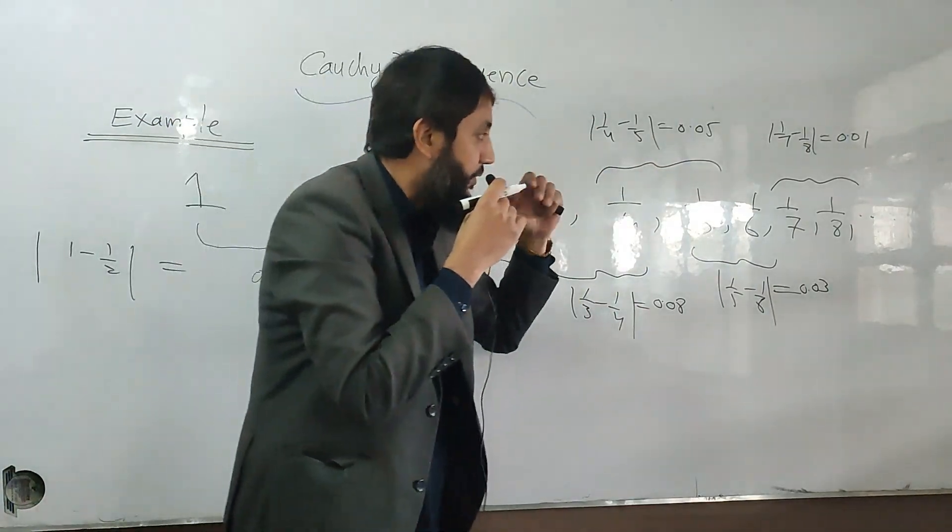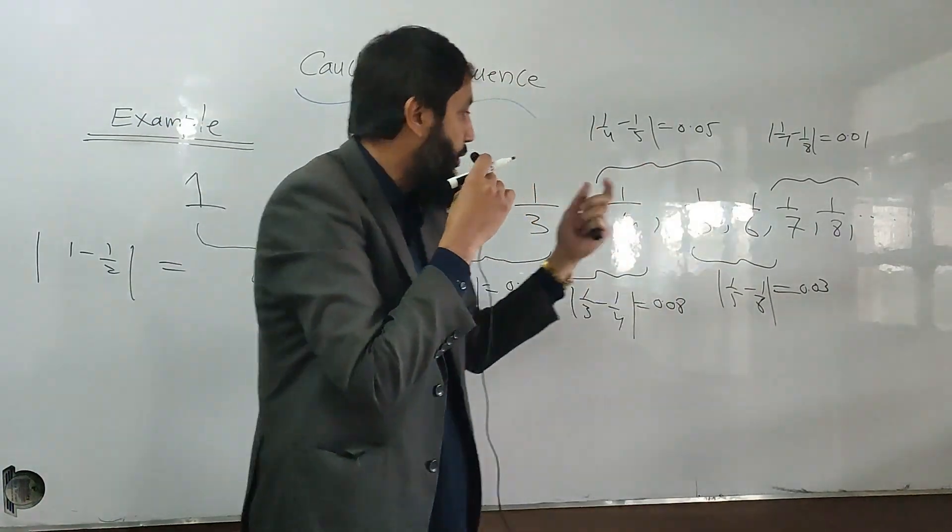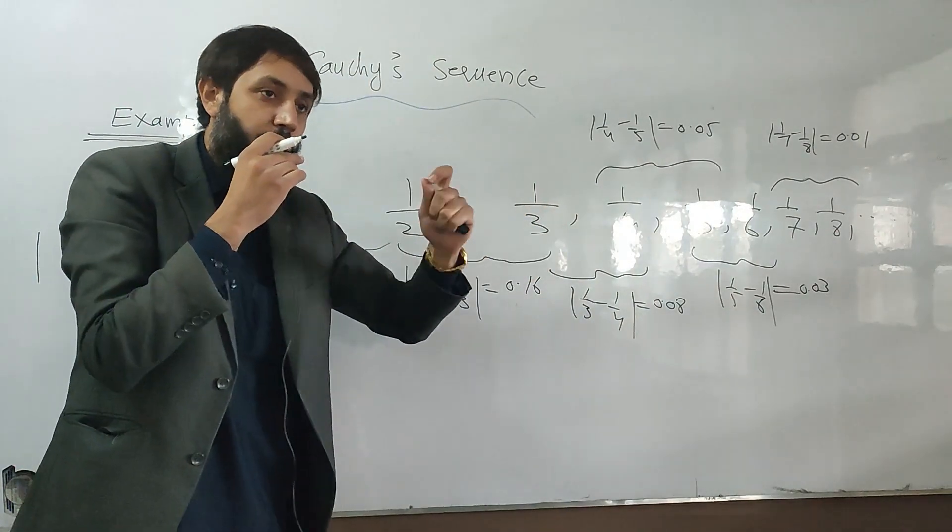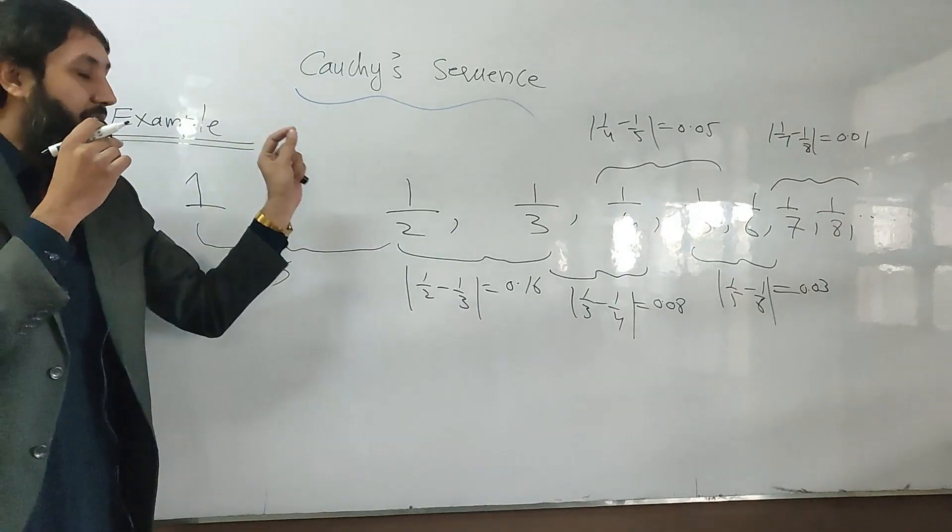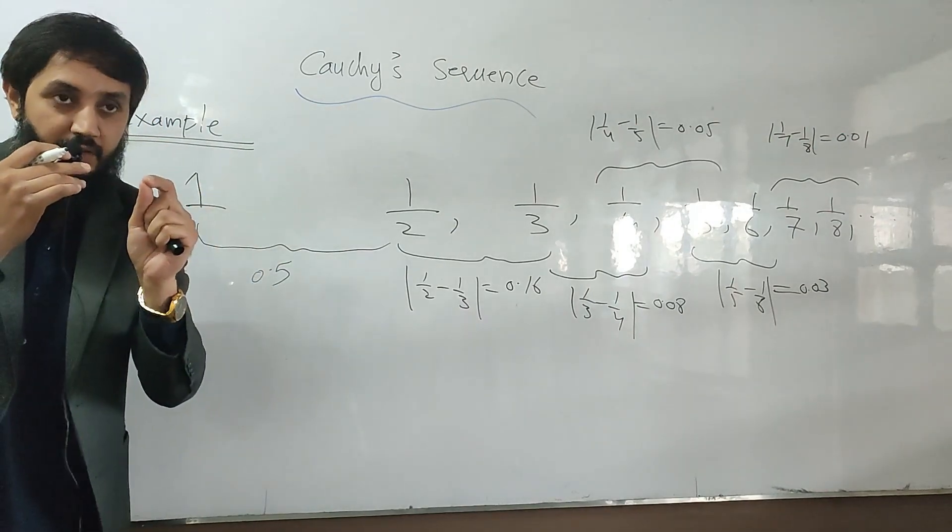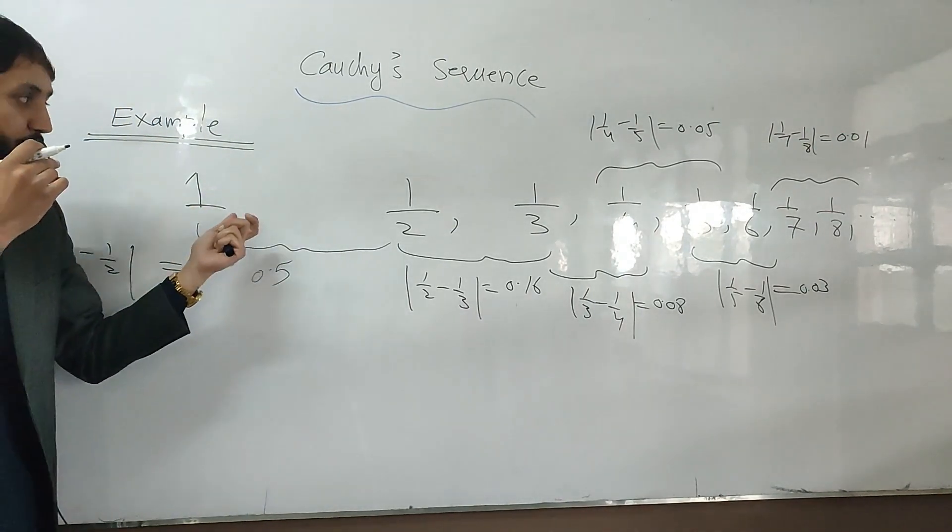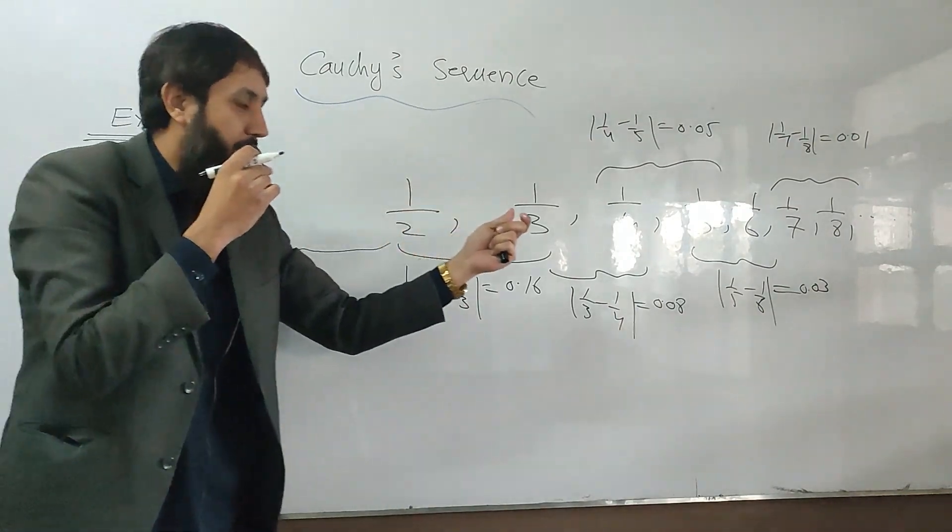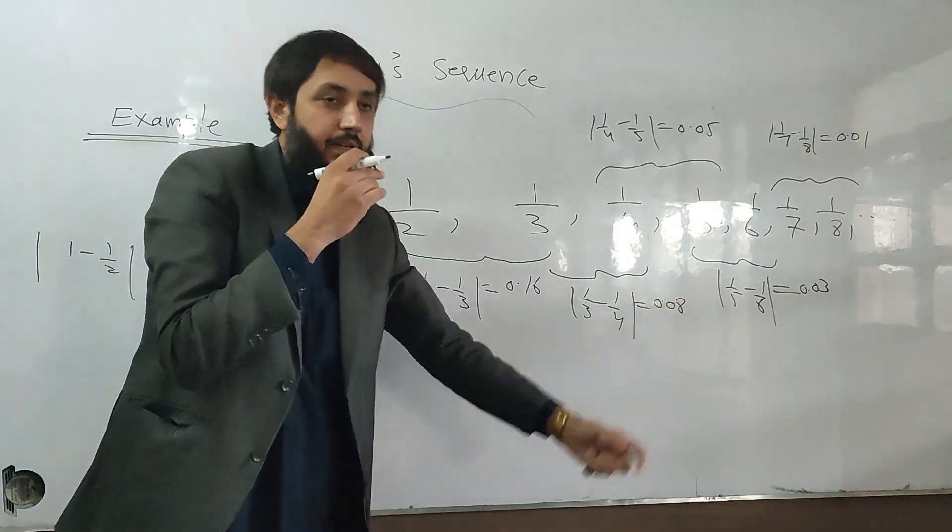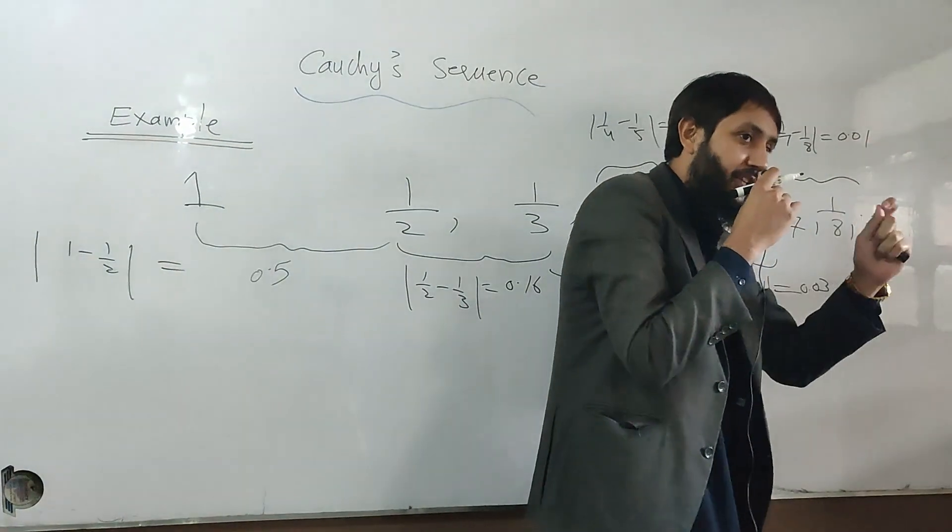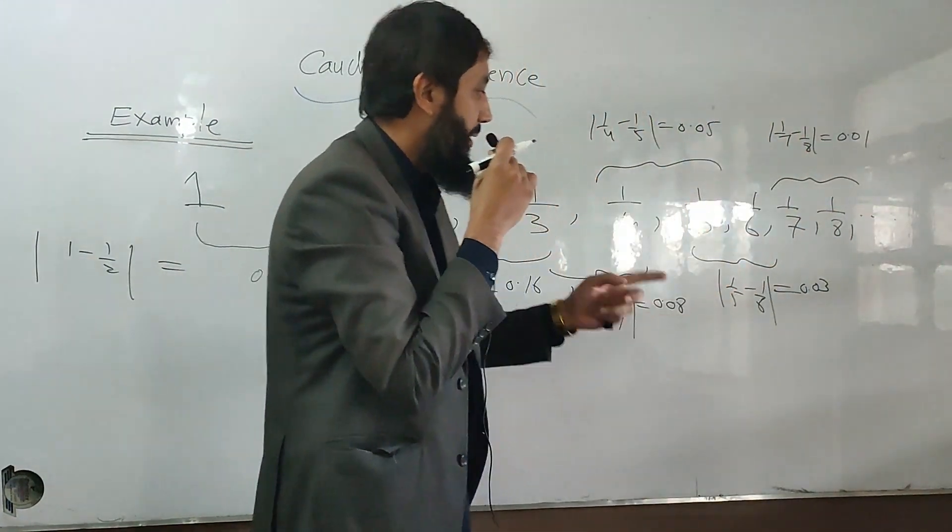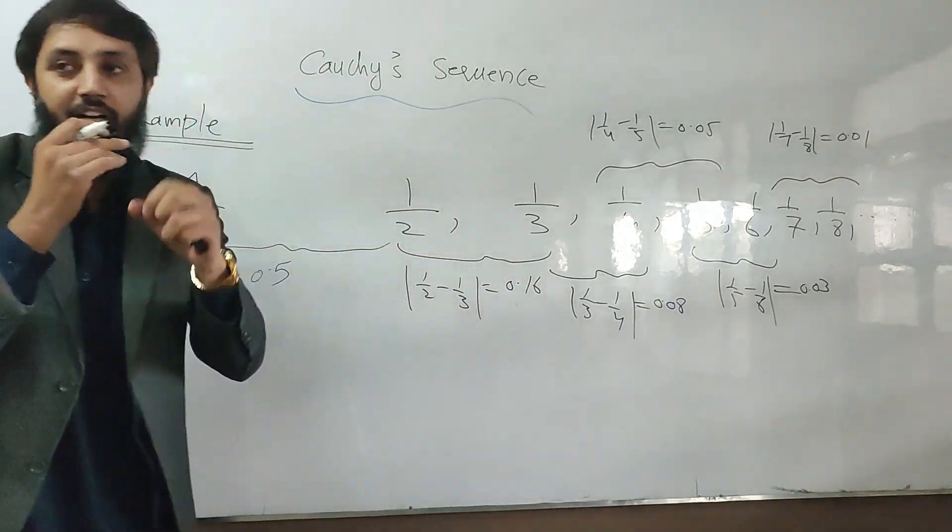And in similar fashion, if you go on, the distance between the terms of the sequence will become very, very small. So a sequence is said to be a Cauchy sequence if the distance between the elements of the sequence becomes arbitrarily small. The more you go ahead, onward, the more the distance is reducing. So do remember such type of sequence is known as a Cauchy sequence.